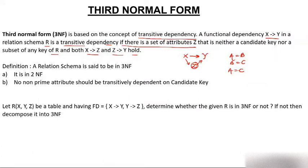A relational schema is said to be in 3NF if it is in 2NF first — any relation of a higher normal form should be in the lower form. Second, no non-prime attribute should be transitively dependent on the candidate key. That is, if X→Y is a transitive dependency and Y is a non-prime attribute, then Y should not be transitively dependent on X.